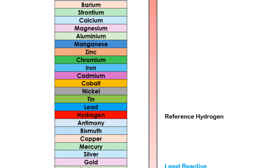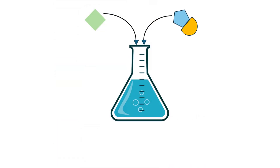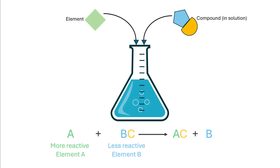Single displacement reaction occurs when two reactants are brought together in a reaction vessel. This type of reaction typically occurs between one reactant that is a pure element and another reactant that is a compound in which one constituent element is less reactive than the reactant in elemental form. A typical displacement reaction can be represented by the chemical equation: A + BC → AC + B.